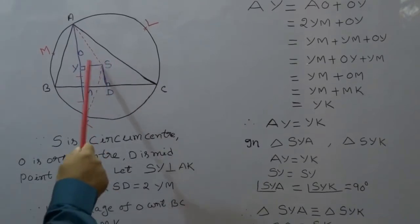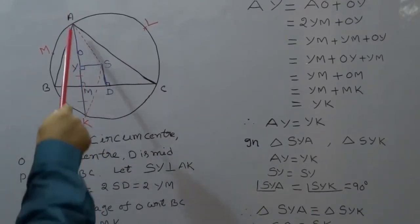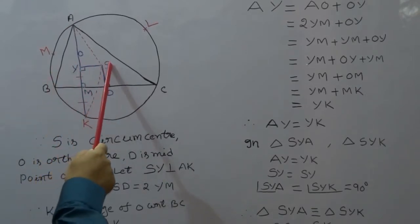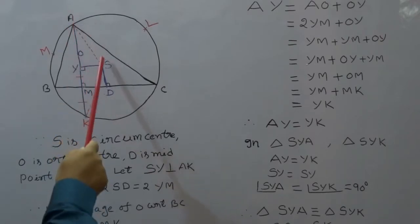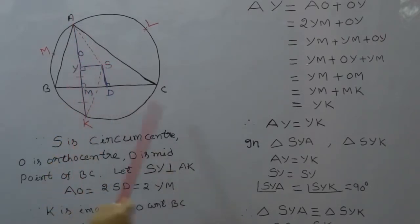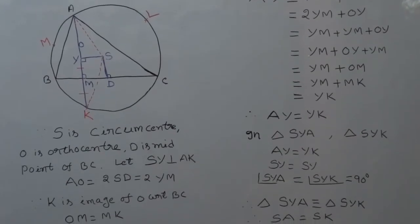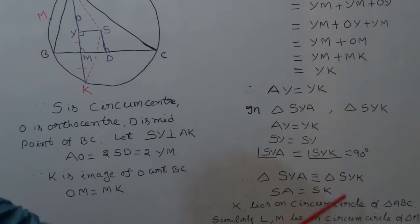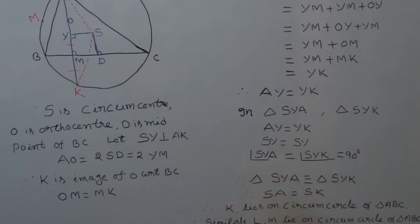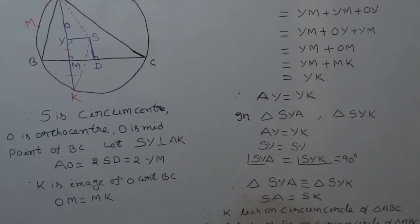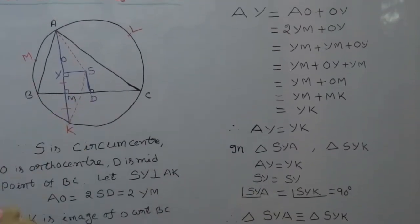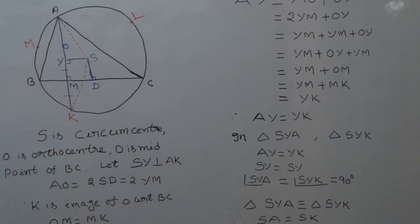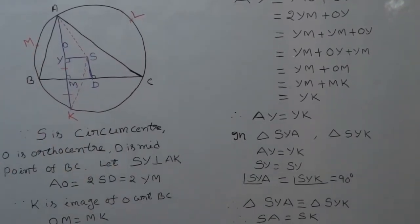In triangles SYA and SYK: AY equals YK, SY equals SY (common side), and angle SYA equals angle SYK (both 90 degrees). Hence these two triangles are congruent. Therefore SA equals SK, which means K lies on the circumcircle of triangle ABC. Similarly, L and M also lie on the circumcircle of triangle ABC.